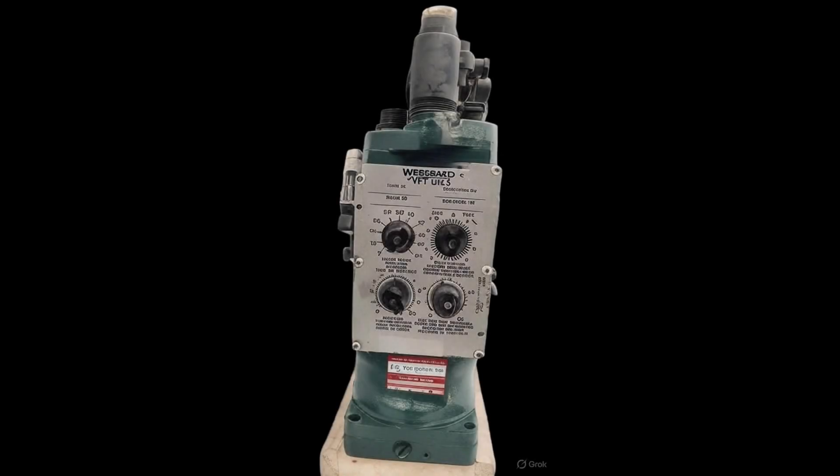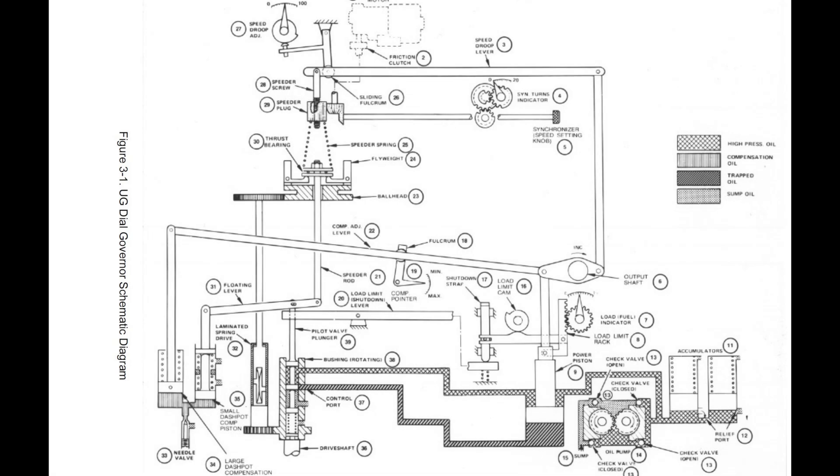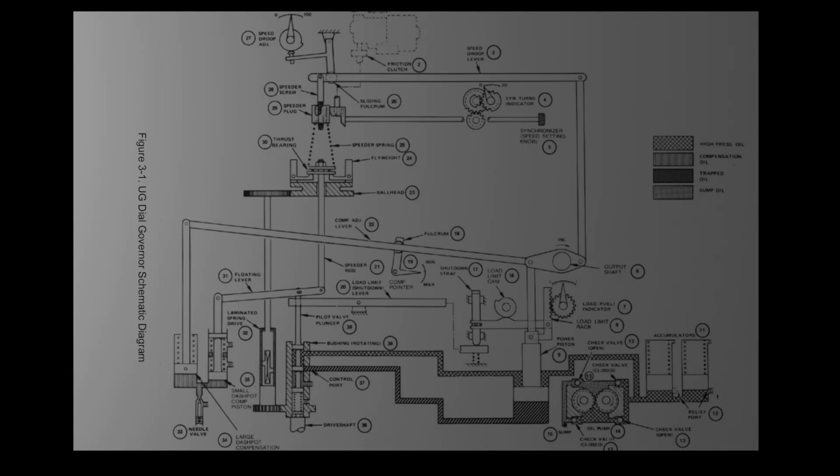This is a UG dial type governor. We shall try to dive into its operation with helping animations. This we will do by breaking into smaller parts by functionality. We have removed some of the important parts from this animation in order to focus only on those parts essential to understand its operation, like the remote speed setting motor, the accumulators, the load limiter, etc.